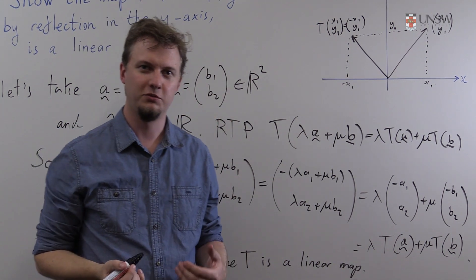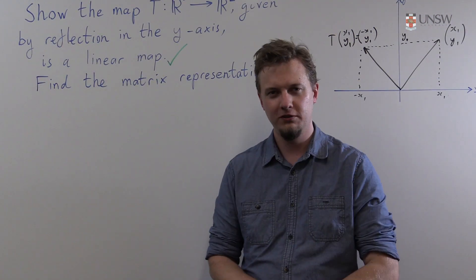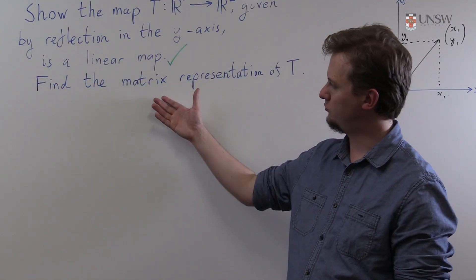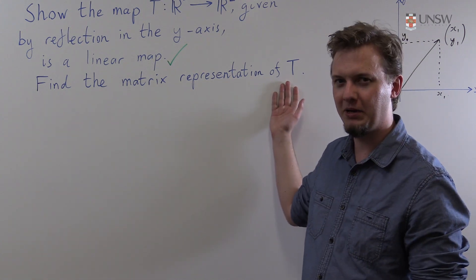And now let's move on to the second part of this question. So for the second part of this question we're tasked with finding the matrix representation for this linear map T.